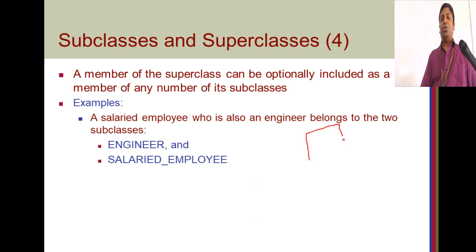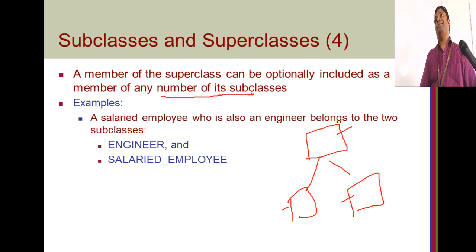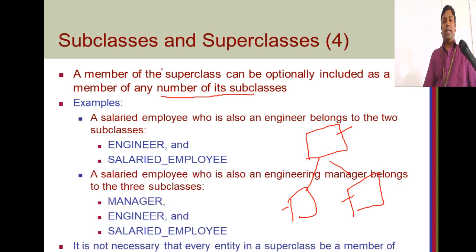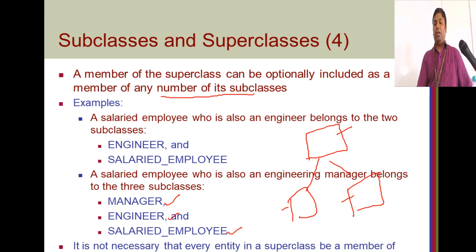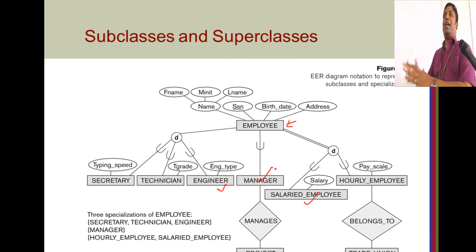Say a professor is also a dean. When you talk about an employee as the superclass, you can have two subclasses — professors and deans. An instance of the superclass can occur in two subclasses — that is allowed. You can take any employee who can be an engineer, a salaried employee, and also a manager. So a manager who is an engineer and also a salaried employee occurs in all three subclasses.